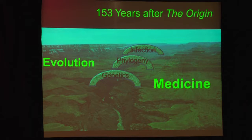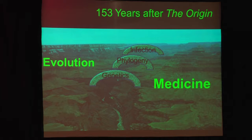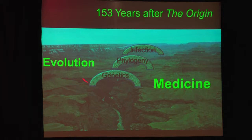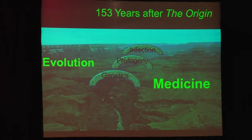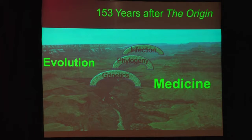So here we are, 153 years after Darwin published The Origin of Species. Are we there yet in terms of applying these basic ideas to medicine? Not hardly. We have some applications in infectious disease, some phylogenetic methods to trace genes in tumors and infectious disease, and of course there's evolutionary genetics. But this is a grand canyon dividing medicine from the basic science of evolutionary biology.